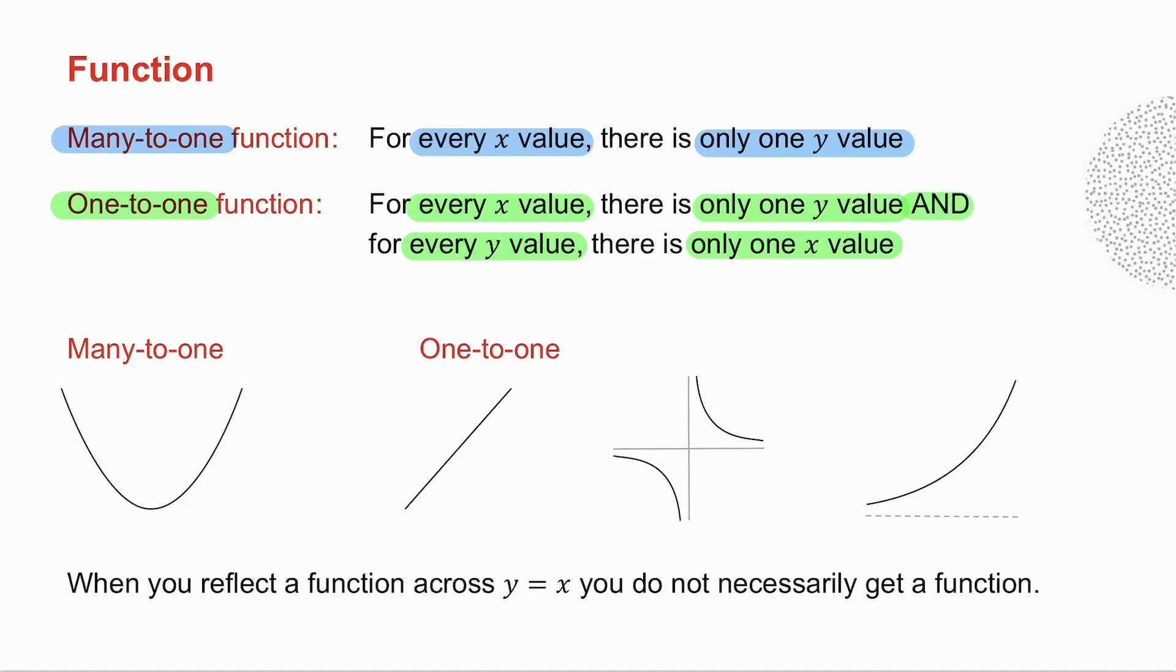A straight line, a hyperbola, and an exponential are all examples of one-to-one functions. Now when you reflect a function across the line y equals x, you do not necessarily get a function. In other words, the inverse of a function is not necessarily a function.